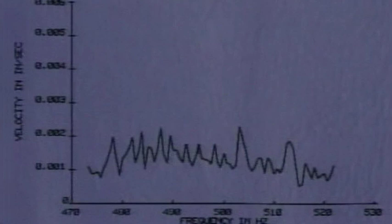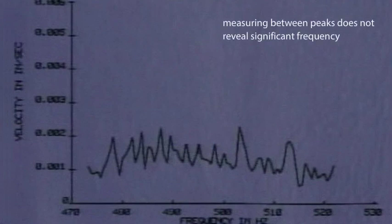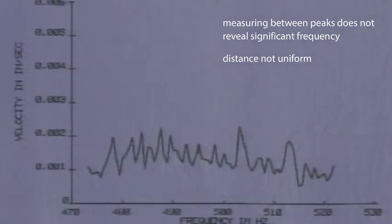Let's zoom in and look at the peaks more closely. They appear poorly formed and random. Measuring the distance between the peaks does not reveal a significant frequency, such as the one-times or vane-pass frequency. And the distance is not uniform between different pairs of peaks.